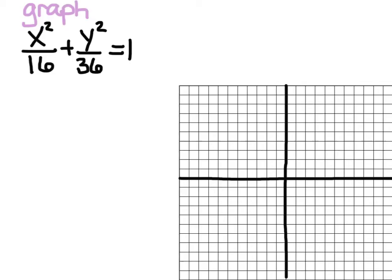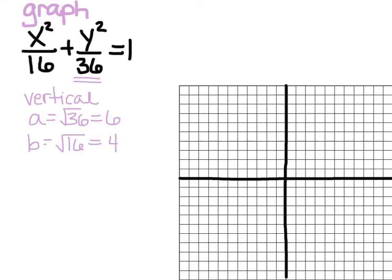In this example, we want to graph X squared over 16 plus Y squared over 36 equals 1. The first thing we're going to do is decide if it's horizontal or vertical. The bigger number is under the Y, so it's going to be vertical. That tells me A is the square root of 36, which is 6. And then B is going to be the square root of 16, which is 4. We can figure out C because C squared is A squared minus B squared: 36 minus 16 is 20, so C is the square root of 20, which simplifies to 2 root 5.